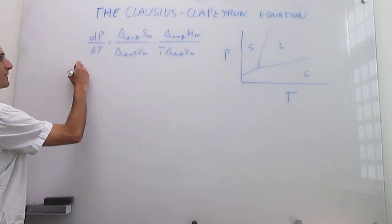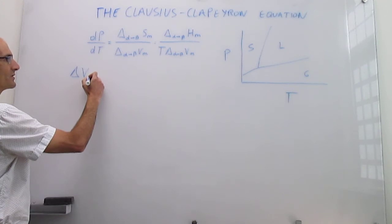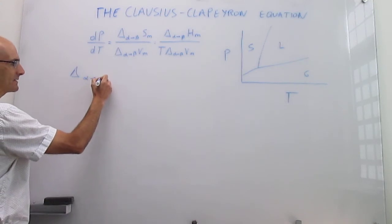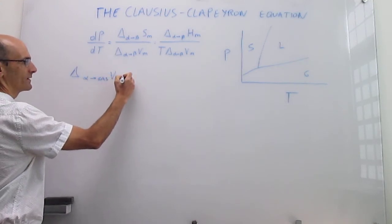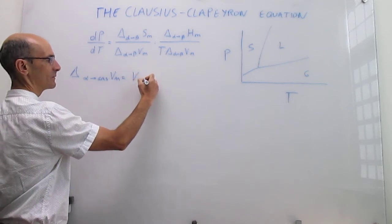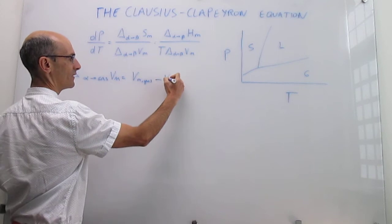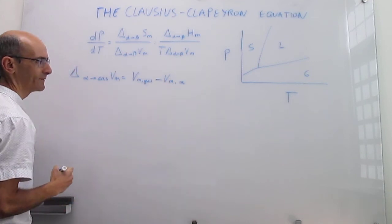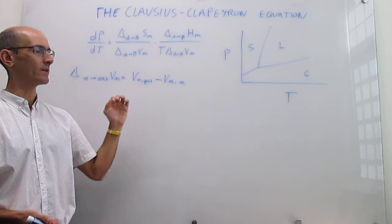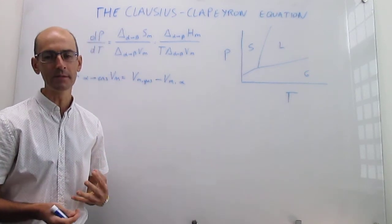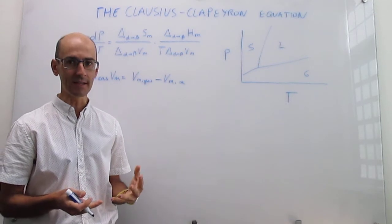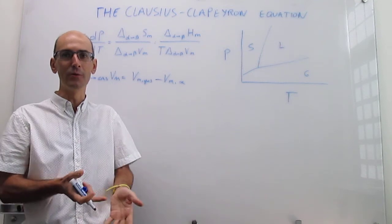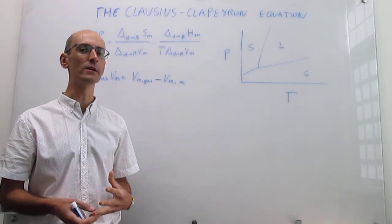The term in the denominator is the change in molar volume going from an initial phase — either liquid or solid — to the gas. That is simply the molar volume of the gas minus the molar volume of the initial phase. For water at ambient conditions (1 atm, 288 K), the molar volume of the gas is about 24 liters, while liquid water is only 18 milliliters.